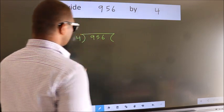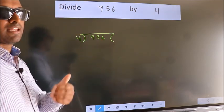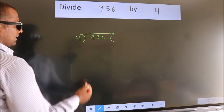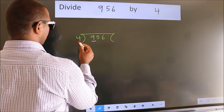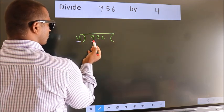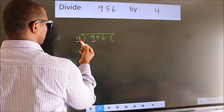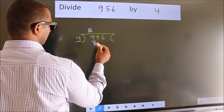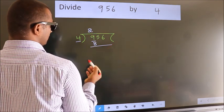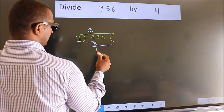This is step 1. Next, here we have 9, here 4. A number close to 9 in the 4 table is 4 times 2, 8. Now we subtract and get 1.